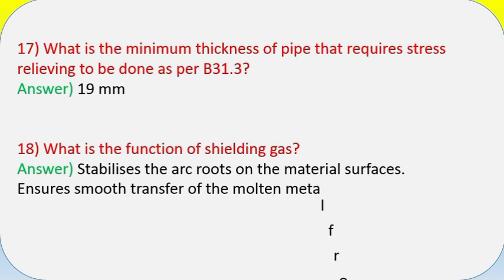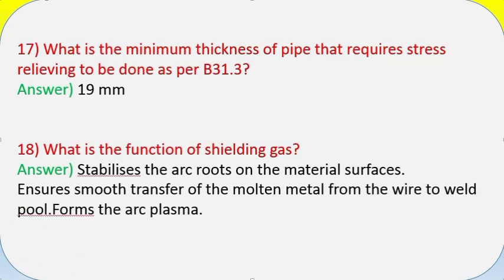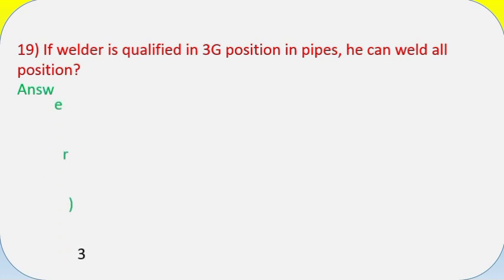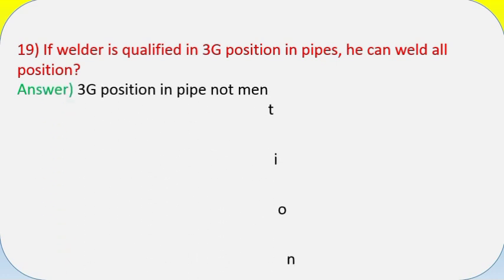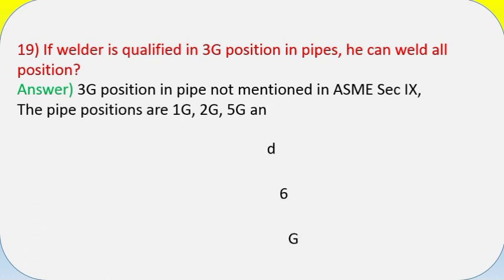Question 18: What is the function of shielding gas? Answer: It stabilizes the arc, roots on the material surfaces, ensures smooth transfer of molten metal from wire to weld pool, and forms the arc plasma. Question 19: If a welder is qualified in 3G position, can he weld all positions in pipes? Answer: The 3G position in pipe is not mentioned in ASME Section 9. The pipe positions are 1G, 2G, 5G, and 6G as per ASME Section 9.